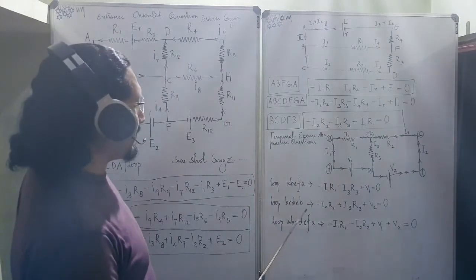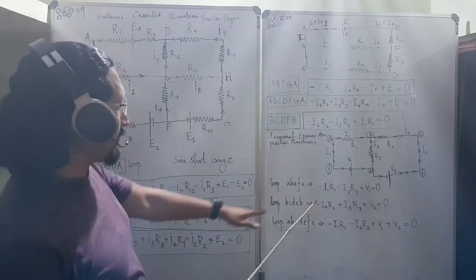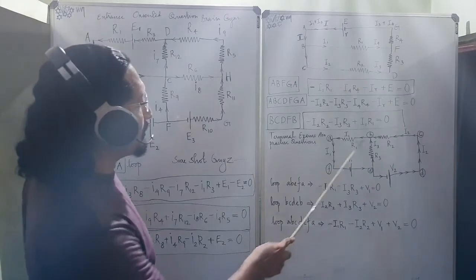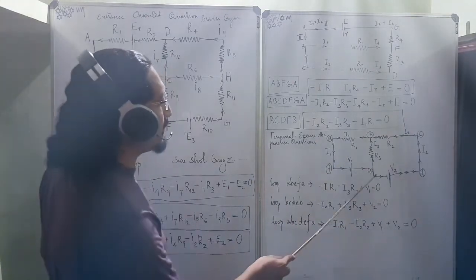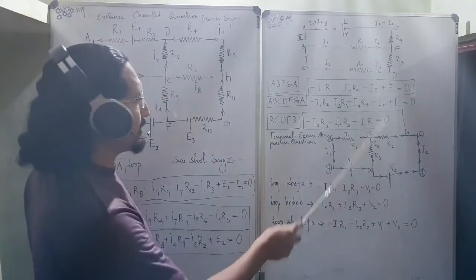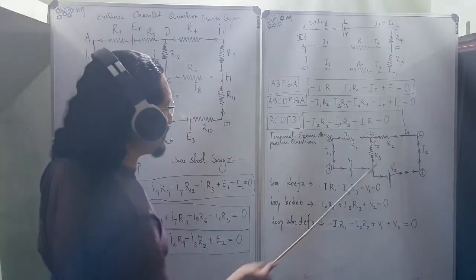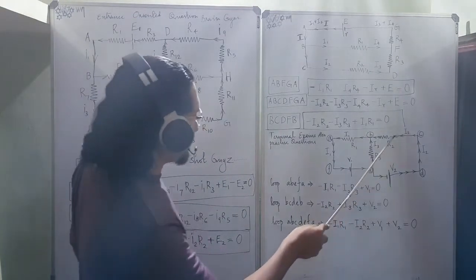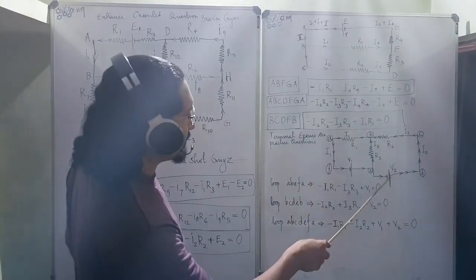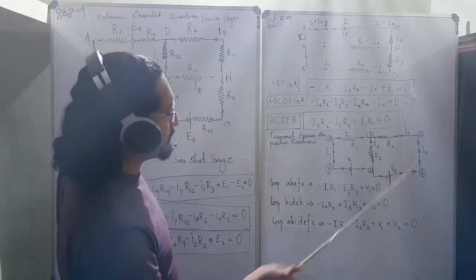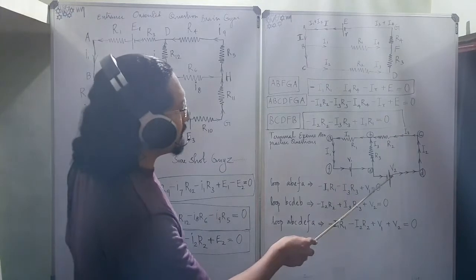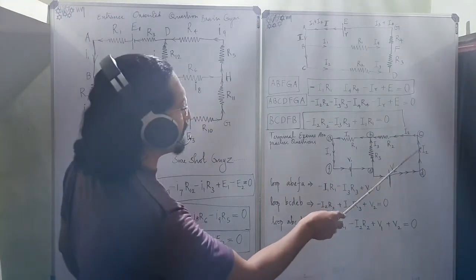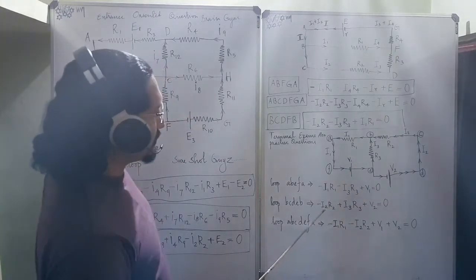Loop B-C-D-E-B. That means B-C-D-E-B. This big section. So, there is a cell. Minus this cell. Write it same as there, V2. V2 cell is there. Then emanating from that the current is going. So, minus I2*R2.